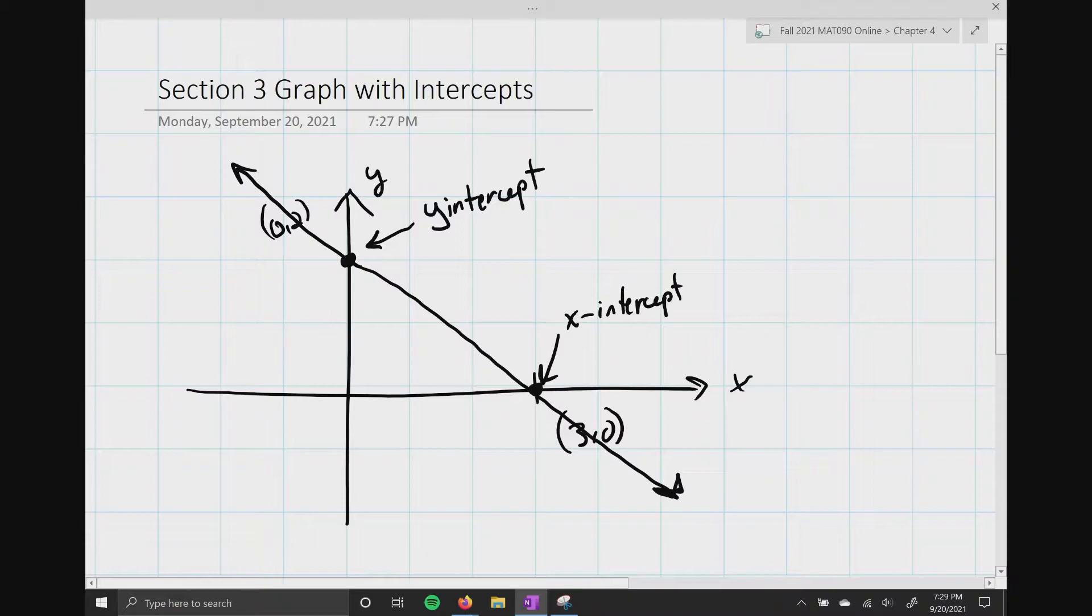Now, at a y-intercept, and I'm going to write this here. At a y-intercept, you've got to remember, it's going to be 0 comma y, and most importantly, x will always equal 0, and that is huge for us. And you'll see why in a little bit.